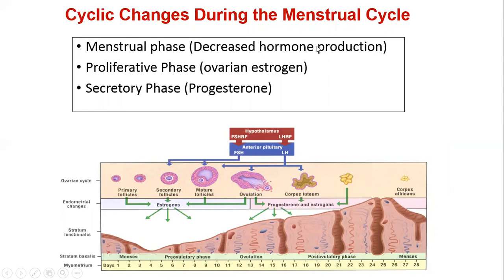In the menstrual phase, there will be sloughing off. Soon after, there has to be proliferation, which is under the effect of ovarian estrogen. After that there will be the secretory phase, which is under the effect of progesterone.